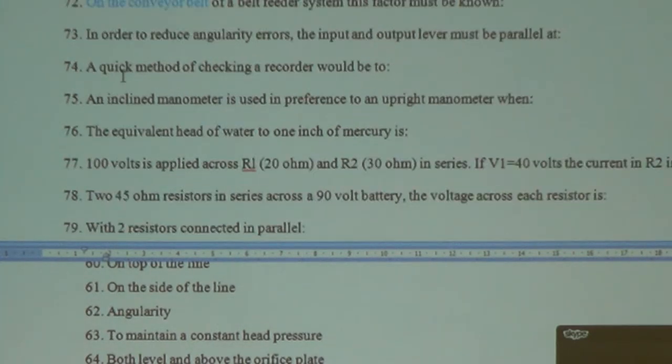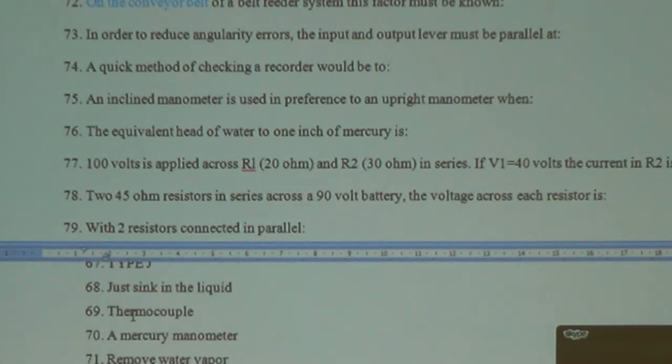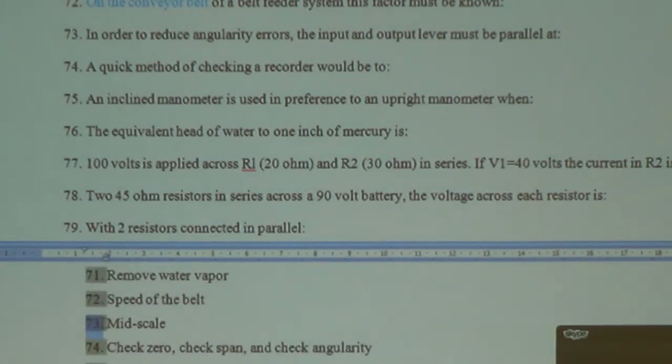In order to reduce the angularity errors, the input and output levers must be parallel at mid-scale. Remember, we do squaring - squaring is done for mid-scale adjustments.